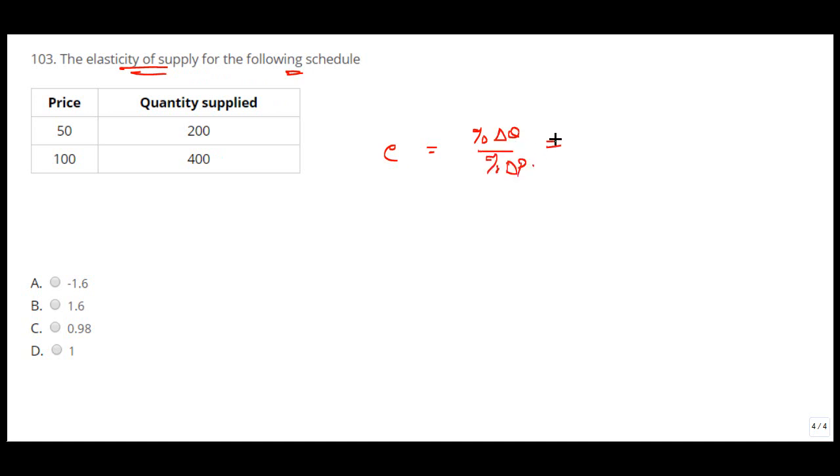We are looking for the point elasticity. That will be change in the quantity by initial quantity, change in the price by initial price. Let us say suppose this is your initial quantity, this is your initial price.